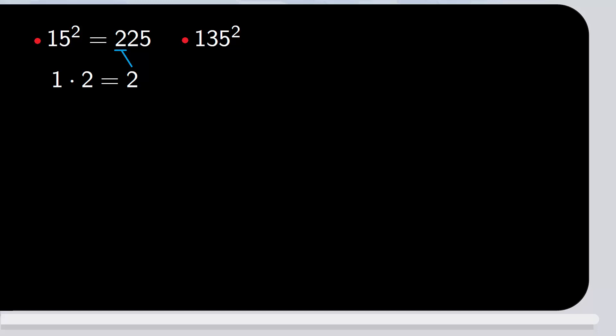What about the square of 135? Again, we write 25 at the end. The number in front of 5 is 13, which we multiply by the next number, 14, to get 182, which we write in front.